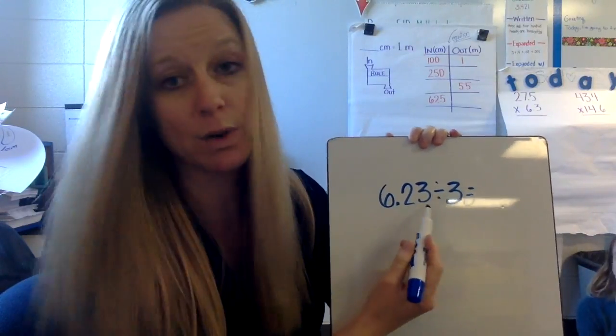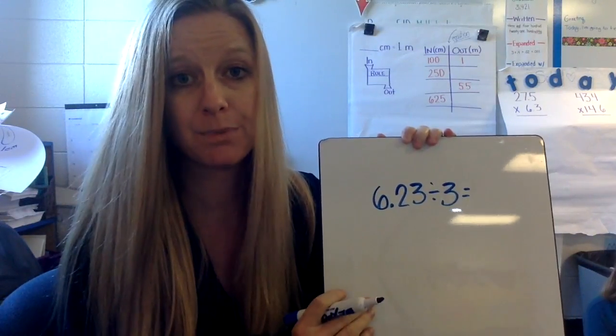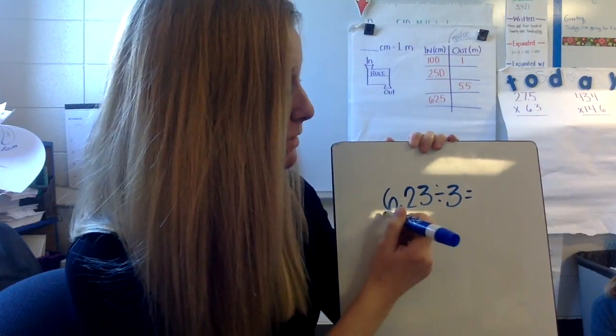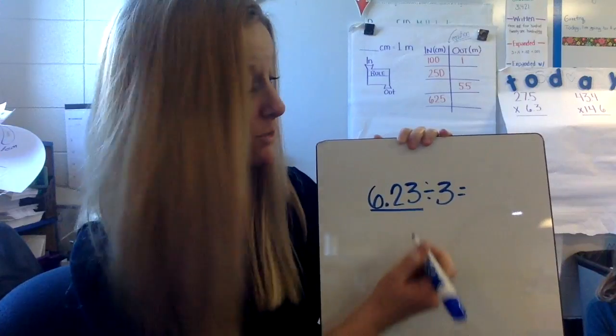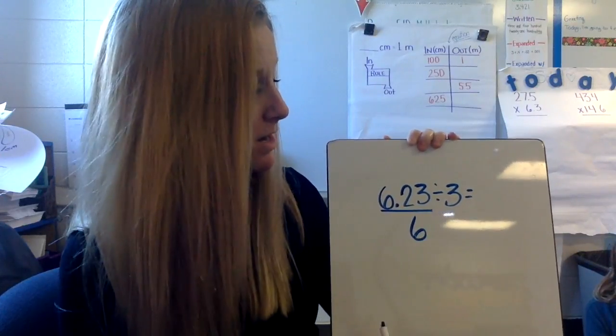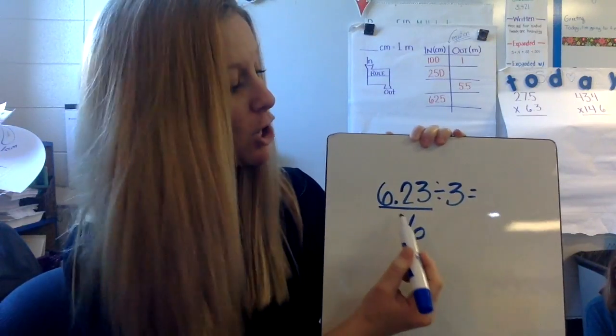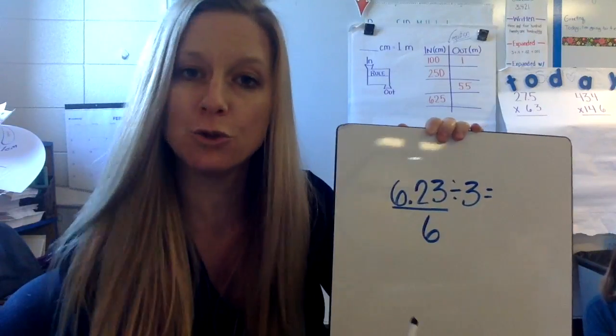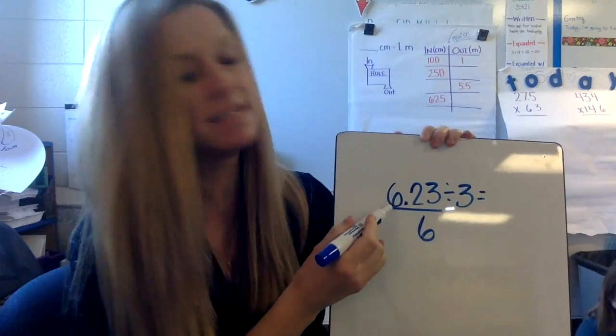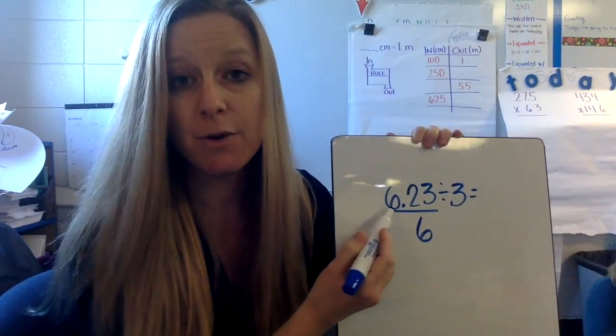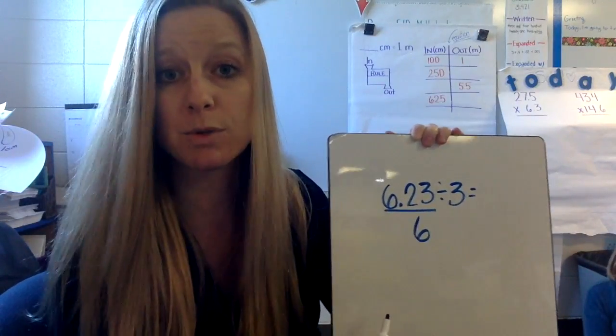I am first going to round my number with a decimal to the nearest whole number, which in this case is going to be 6. I know this because when I look in my tenths place I see a 2. I know anything lower than a 5 is going to make this digit remain the same. If it were 5 or greater then I would bump that up to a 7, but today I'm going to leave it a 6.